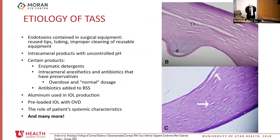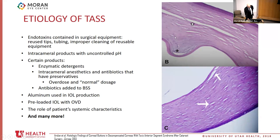What causes TASS? Unfortunately, many things do. Endotoxins on surgical equipment from improper cleaning introduced into the eye can trigger an inflammatory cascade. Certain substances with wrong pH, detergents, or overdoses of pharmaceuticals can cause it. Enzymatic detergents that cannot be deactivated in an autoclave can also cause TASS. On pathology, an H&E stain of a corneal button from a TASS patient shows a complete dearth of endothelial cells and invagination of Descemet's membrane in the stroma.